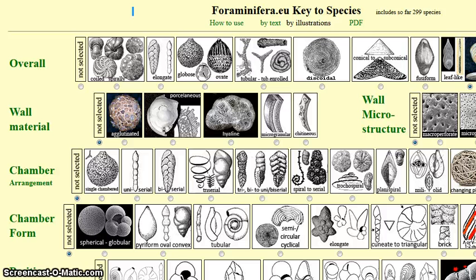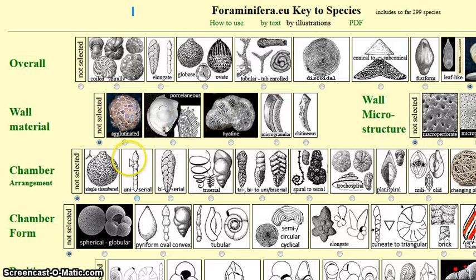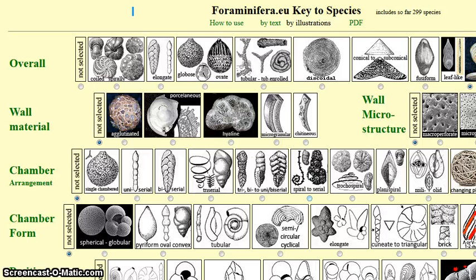But let's take a look at our foraminifera again. You can see definitely an initial spiral part here. So going back to the category 'chamber arrangement', you have 'biserial' with no spiral part, but you also have 'spiral to serial'. So the best choice in this category will be 'spiral to serial'. Careful observation after knowing the features is essential here, by the way, in any key to species.